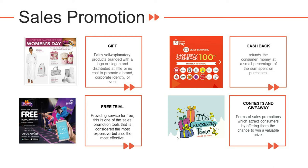Next is free trial — providing a service for free. It is considered the most expensive sales promotion tool. For example, Celebrity Fitness gives a free trial with some terms and conditions. Next is cashback — a refund of a small percentage of the amount spent on purchases. For example, Shopee gives cashback of 100,000 on selected products.